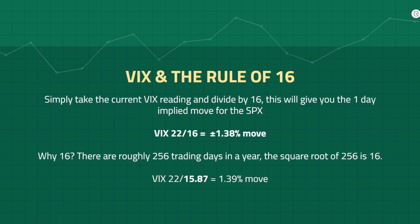A really simple way to calculate the expected move is by using the VIX — this method is known as the rule of 16. Simply take the current VIX reading and divide by 16, and this will give you the one-day expected move for the SPX. For example, if the VIX is trading at 22, divide by 16 and you get a plus or minus 1.38 percent move on that day.